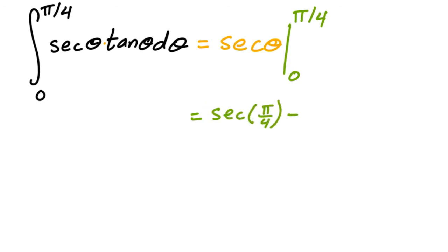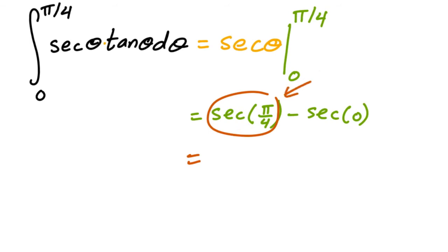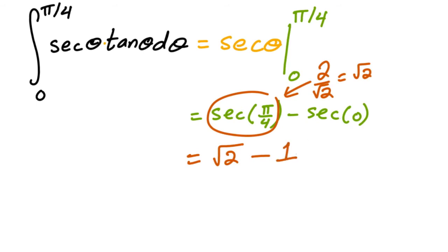We plug in to get secant of π over 4 minus secant of 0. Secant of π over 4 is 1 over cosine of π over 4, which is 1 over root 2 over 2, giving 2 over square root of 2, which reduces to square root of 2. Secant of 0 equals 1, since cosine of 0 is 1. So the answer is square root of 2 minus 1.